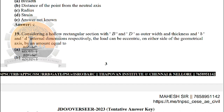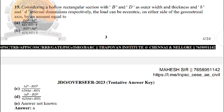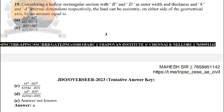Next: considering a hollow rectangular section with B and D as outer width and thickness, and b and d as internal dimensions respectively, the load can be eccentric on either side of the geometrical axis by the amount equal to — the correct answer is option A: (BD³ − bd³) / (6 × D × (BD − bd)).